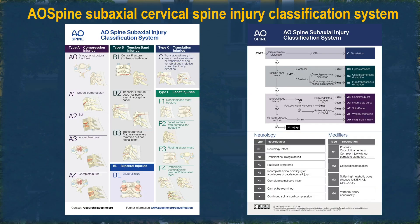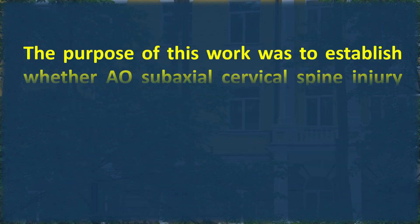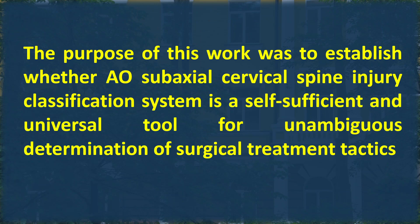According to official publications, when proposing the AO Spine Subaxial Cervical Spinal Injury Classification System, the goal was to develop a comprehensive yet simple classification system with high intra- and inter-observer reliability to be used for clinical and research purposes. The purpose of this work was to establish whether the AO Spine Subaxial Cervical Spinal Injury Classification System is a self-sufficient and universal tool for unambiguous determination of surgical treatment tactics.